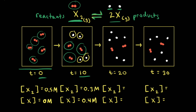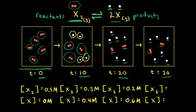We wait another 10 seconds. When time is equal to 20 seconds, now there are two particles of X2 and six particles of X. So now the concentrations are 0.2 molar for X2 and 0.6 molar for X. After another 10 seconds, at 30 seconds total, there are still two particles of X2 and six particles of X, so the concentrations remain 0.2 molar for X2 and 0.6 molar for X.